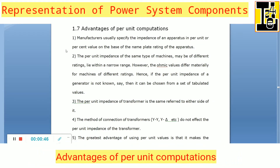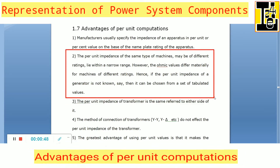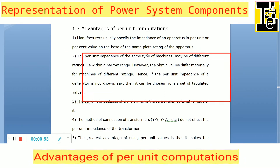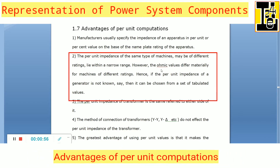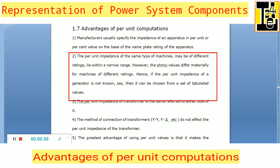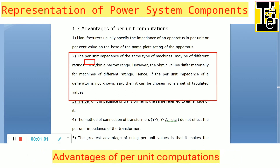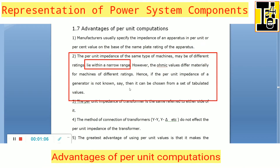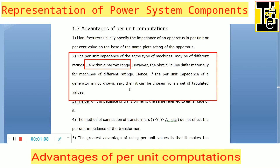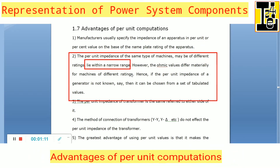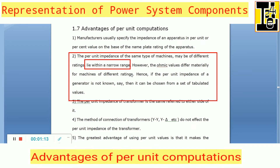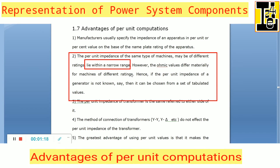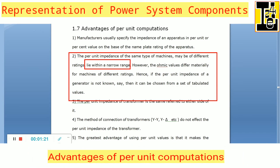The second advantage of per unit computation is that the per unit impedance of same type of machines of different ratings lies within a narrow range, however the ohmic values differ materially for machines of different ratings. Hence, if the per unit impedance of a generator is not known, it can be chosen from a set of tabulated values.